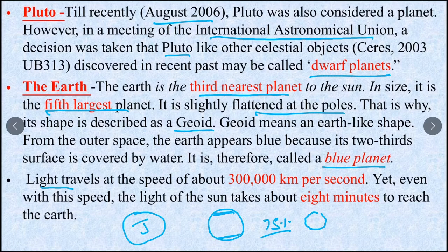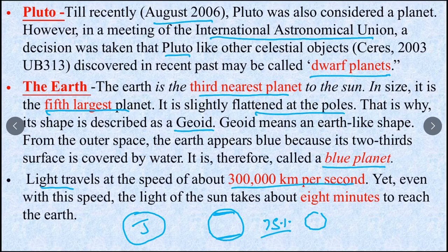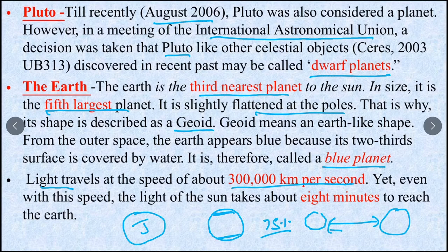Light travels at a speed of 300,000 km per second. This is the speed of light. We know that Sun and Earth's distance is 150 million km, so light takes about 8 minutes to reach Earth.